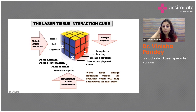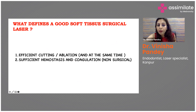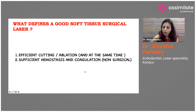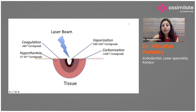When laser energy irradiates tissue, the resulting effect is mapped on a cube. A good soft tissue surgical laser is defined by efficient cutting or ablation, combined with sufficient hemostasis and coagulation. These two effects are highly desirable during clinical practice when interacting with biologic tissue.